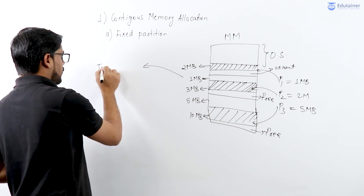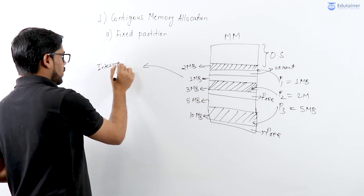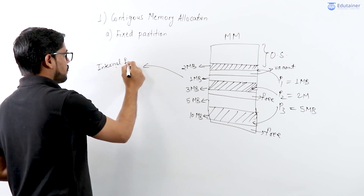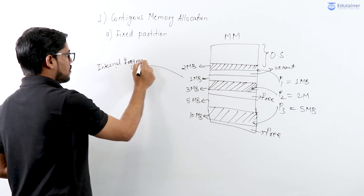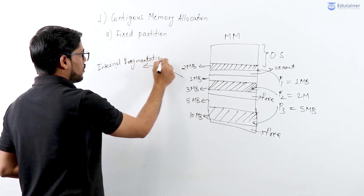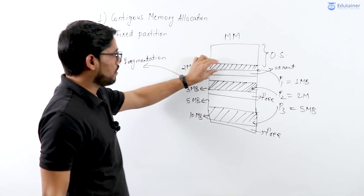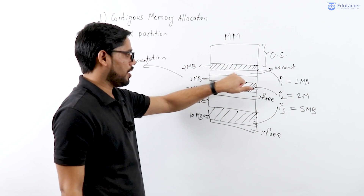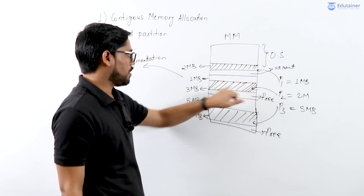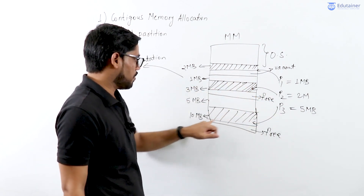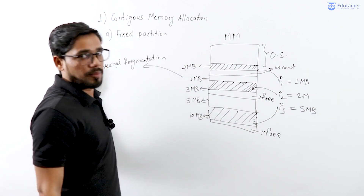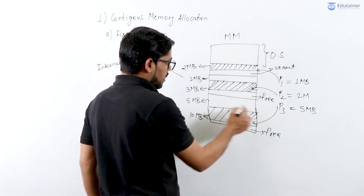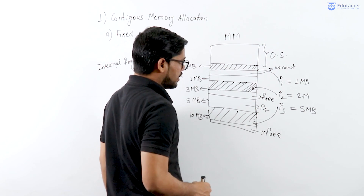This leads to a problem called internal fragmentation. Internal fragmentation occurs because some space is vacant due to improper filling of a fixed partition. P1 takes 1MB but 1MB is free; P2 takes 2MB but 1MB is free; P3 takes 5MB but 5MB is free — this wasted space inside partitions is internal fragmentation.